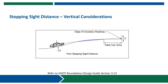Stopping sight distance also needs to be considered relative to the vertical profiles approaching the roundabout. In this particular example, a steeper approach grade has been flattened out near the roundabout entry in order to reduce cross slopes through the crosswalk area to meet ADA. In the process, the sight lines to the yield line and to an object near the yield line have actually been blocked where the vertical profile is blocking the driver's line of sight. So that's something that needs to be evaluated relative to the vertical profiles and the grading of the overall intersection as the vertical design is being developed.